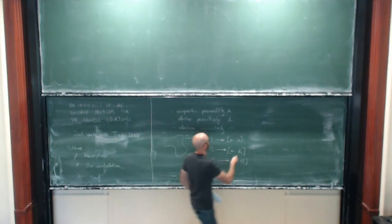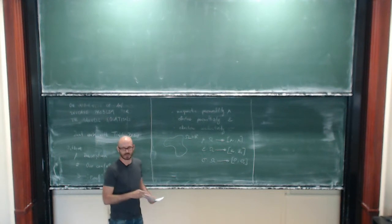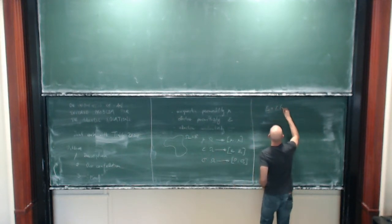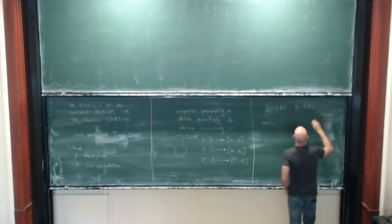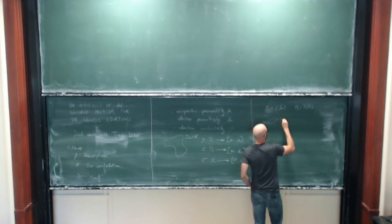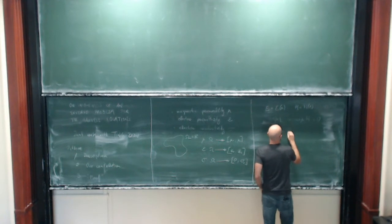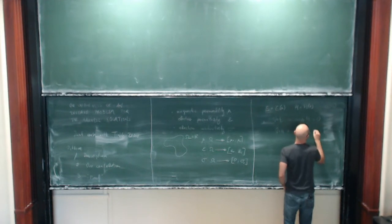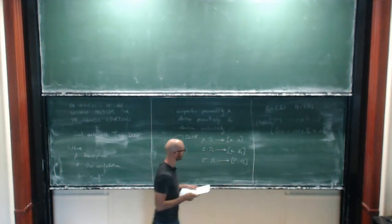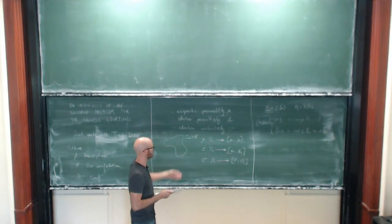Moreover, we assume that the electromagnetic fields we are looking at are time-harmonic, meaning the only current density we consider is the ohmic current density. So the electromagnetic fields are of the form A equal to H of x with some positive frequency. The equations of interest are the time-harmonic Maxwell equations: curl of E minus i omega mu H equals zero, and curl of H plus i omega epsilon E equals sigma E. These are the Maxwell equations providing the physical background for determining the electromagnetic properties mu, epsilon, and sigma.